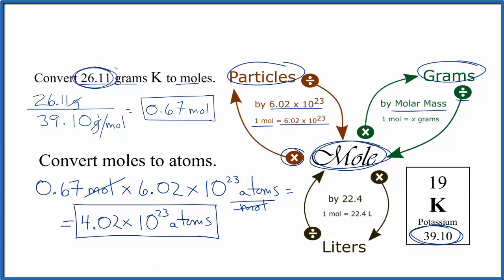So to recap, we took the grams we were given, we converted that to moles, then we took the moles, multiplied it by Avogadro's number, to get the number of atoms of potassium. This is Dr. B, and thanks for watching.